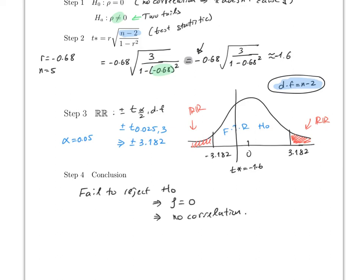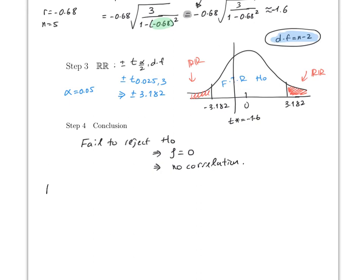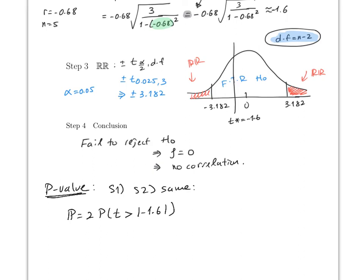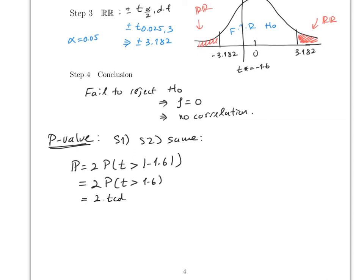For the p-value, since this is two-tailed: p-value = 2 × P(t > |t*|) = 2 × P(t > 1.6). Using the calculator: 2 × tcdf(1.6, 1000, 3) = 2 × 0.10395 ≈ 0.2079.